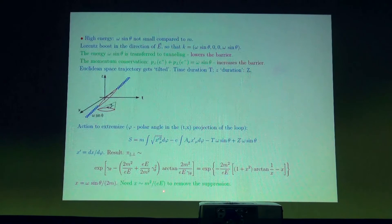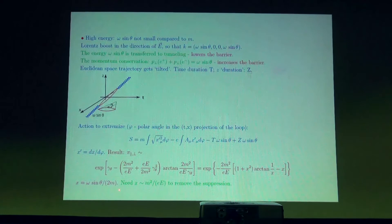So if the electric field is a thousand times smaller than the critical field m squared, then one needs this parameter x — the perpendicular momentum over 2m in units of e — to be of order a thousand. So one needs a GeV photon beam to make the exponent of order one. But then it becomes not very spectacular or interesting, although still interesting.